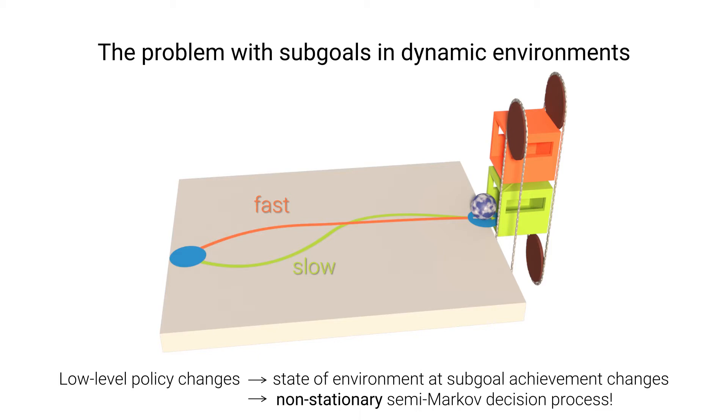More precisely, since the amount of time that passes until a subgoal is achieved varies, the high-level interacts with a non-stationary, semi-Markov decision process.